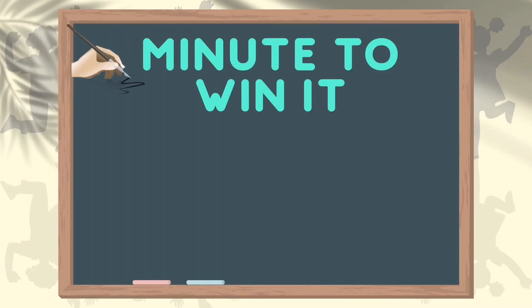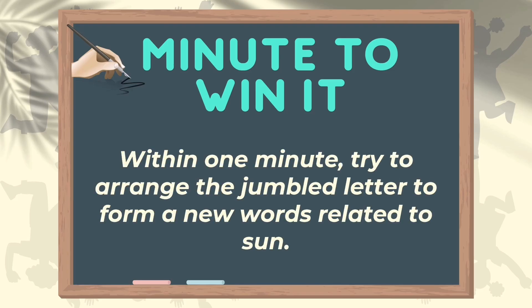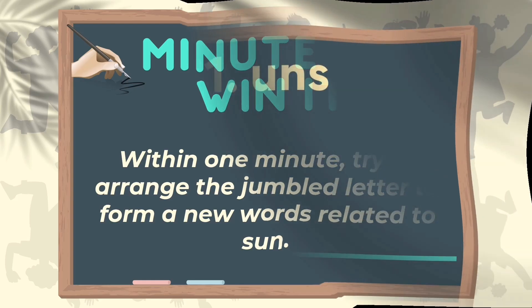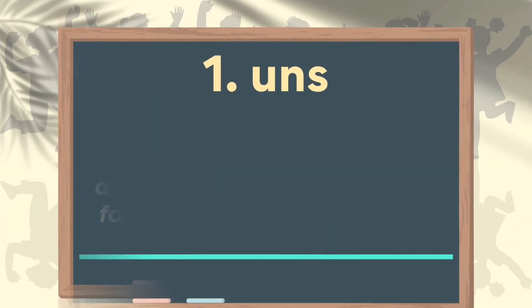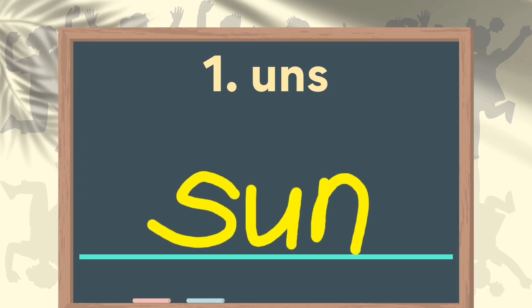Now let's play a game called Minute to Win It. Within one minute, try to arrange the jumbled letters to form new words related to the sun. Are you ready? Good luck! Number one — the word you can form is sun.